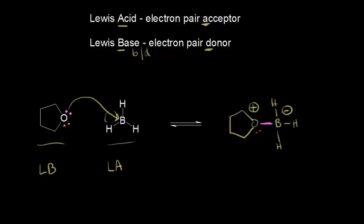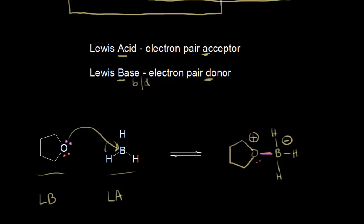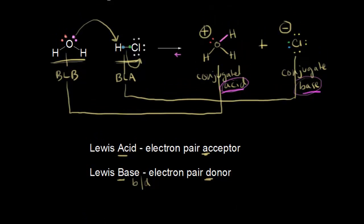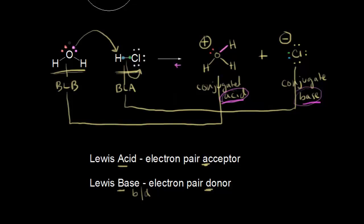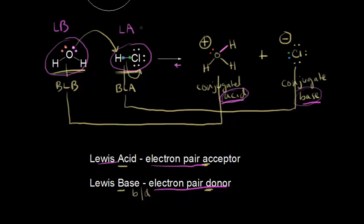The Lewis acid-base definition is more inclusive than Bronsted-Lowry. Going back to the previous HCl reaction, we can also classify those using Lewis definitions. Water is donating a pair of electrons — that's an electron pair donor, so water is a Lewis base. HCl is accepting a pair of electrons — that's an electron pair acceptor, so HCl is a Lewis acid. So regardless of which definition you use, Bronsted-Lowry or Lewis, water is the base and HCl is the acid.